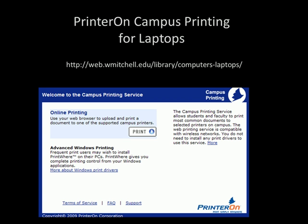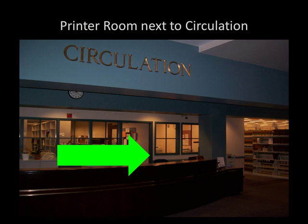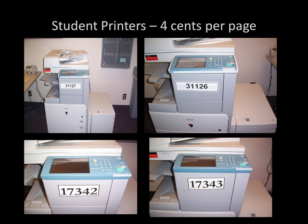The directions can be found at the link listed. These documents will print in the printer room next to the circulation desk. There are four printers — be sure to recall the number of the printer that you send your print job to. This will cost you $0.04 per page. If you use up all of your printing money, you can reset your printing balance by going to the circulation desk and giving them cash or check.